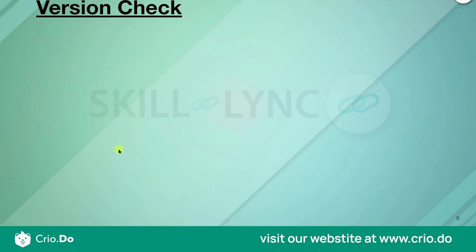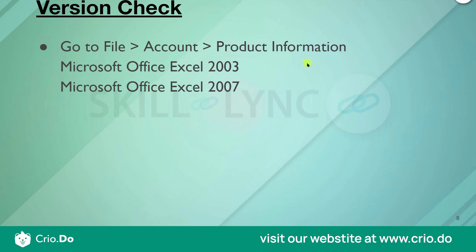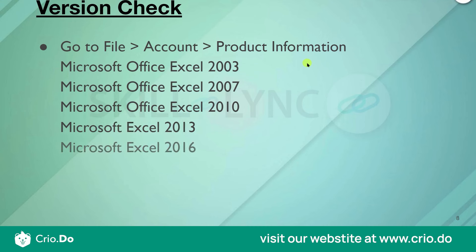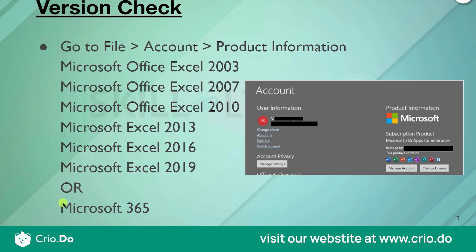Next, let's check the Excel version installed on your system. Go to File, then click Account, and you will find the Product Information section. Versions available include 2003, 2007, 2010, 2013, 2016, 2019, or the latest Microsoft 365. In this system, Microsoft 365 is installed. Following File > Account > Product Information shows the product name, subscription details, and version information for Microsoft 365.